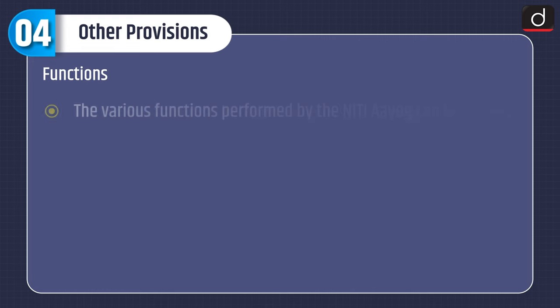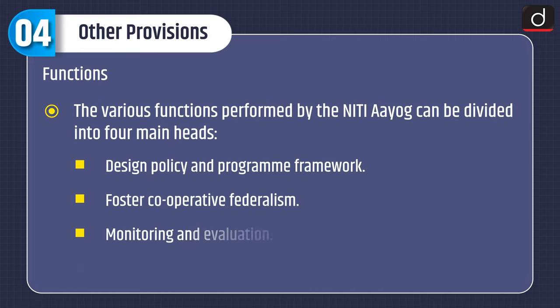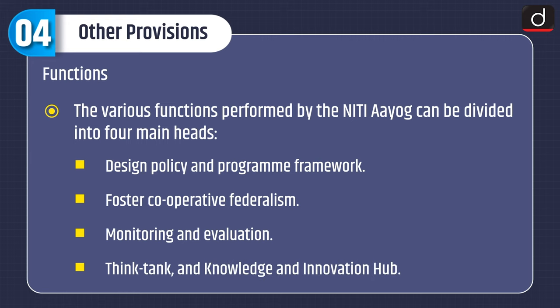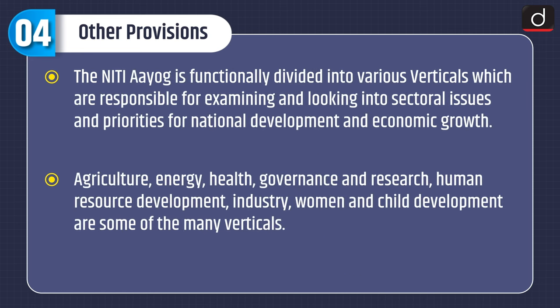Next is Functions. The various functions performed by NITI Aayog can be divided into four main heads: design policy and program framework, foster cooperative federalism, monitoring and evaluation, and think tank and knowledge and innovation hub. NITI Aayog is functionally divided into various verticals responsible for examining sectoral issues and priorities for national development and economic growth. Agriculture, energy, health, governance and research, human resource development, industry, and women and child development are some of the many verticals.